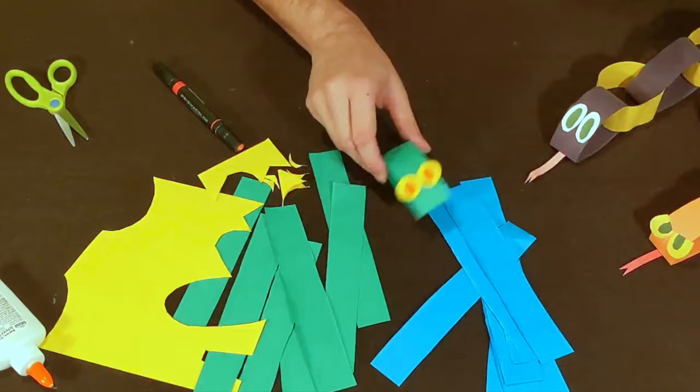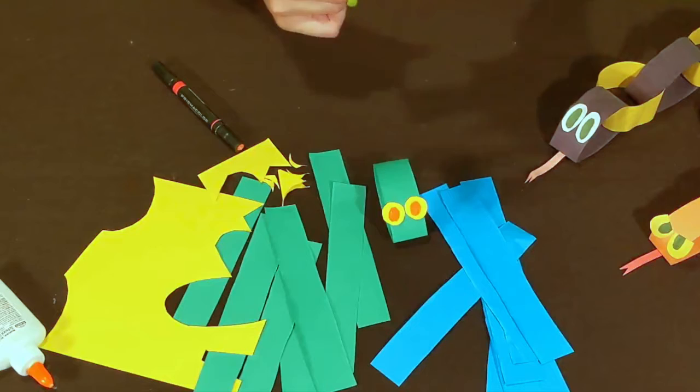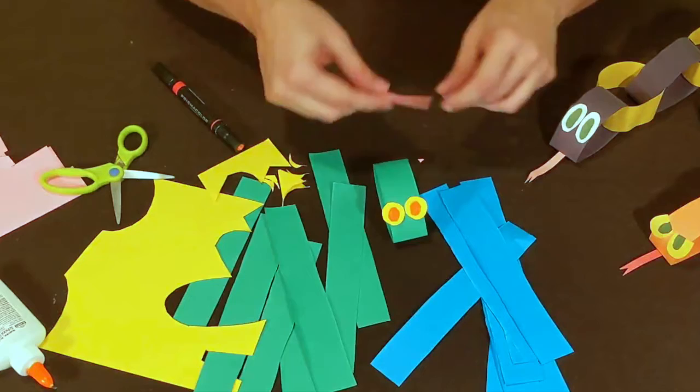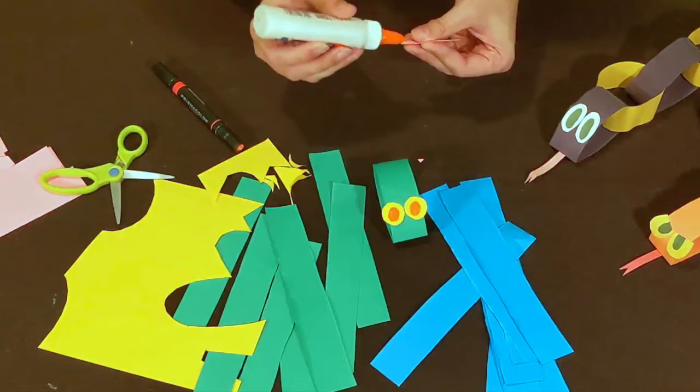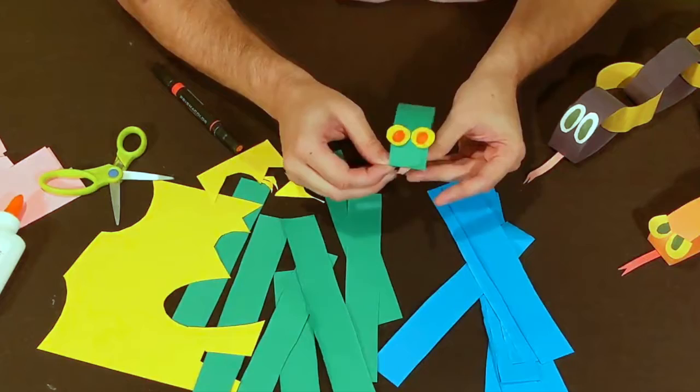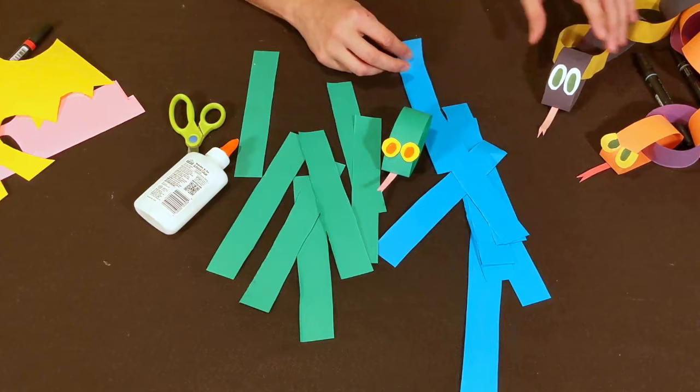And so next I'm going to cut a little tongue out here because snakes like to stick their tongue out. I'll cut a little tongue, I'll put a little fork in it right at the very end. Snakes got little forked tongues. I'll put a little bit of glue on this end of the tongue. I'm just going to glue it right under here where our fold was. So there we go, there's our snake's head.